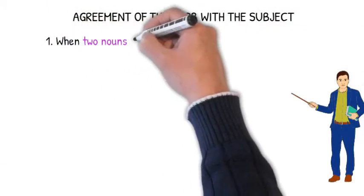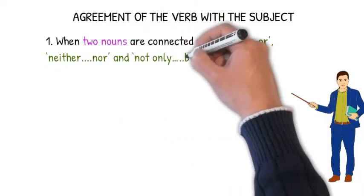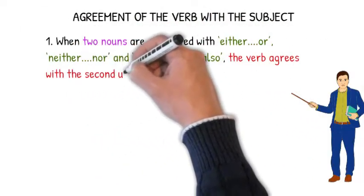When two nouns are connected with either or, neither nor, and not only but also, the verb agrees with the second unit.